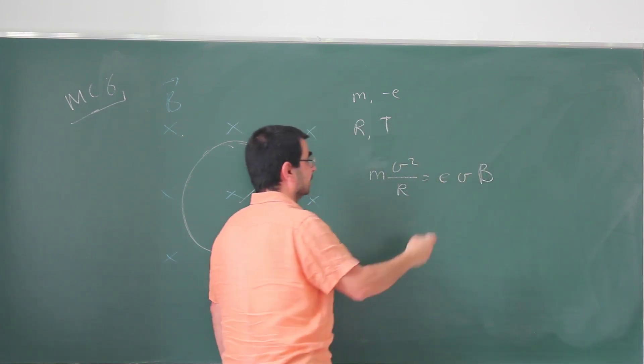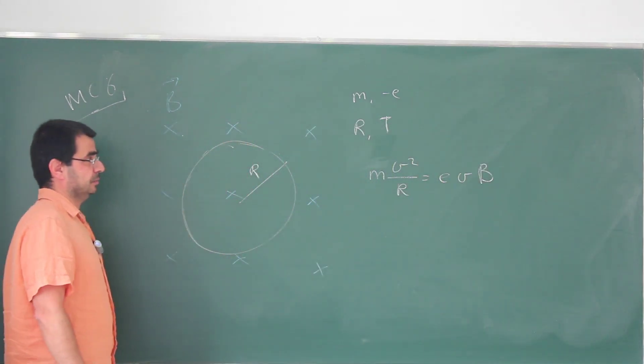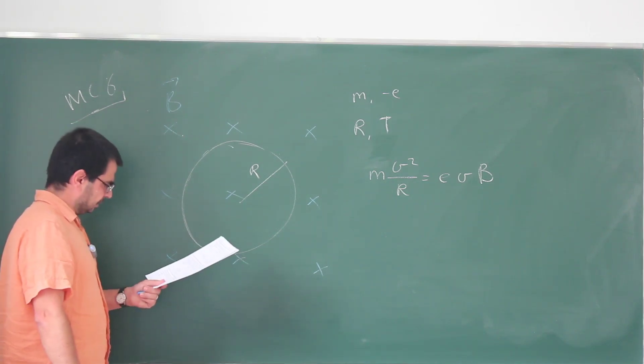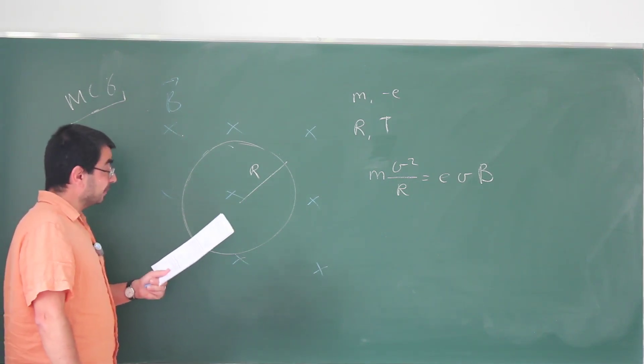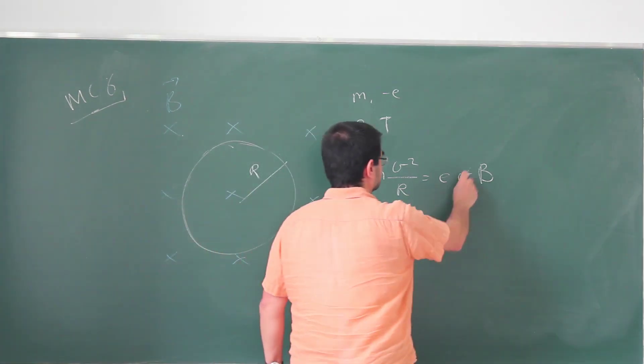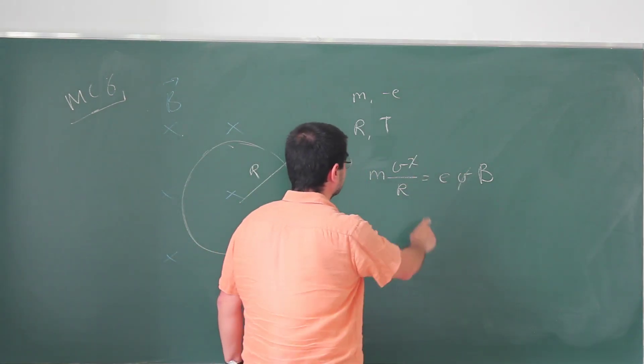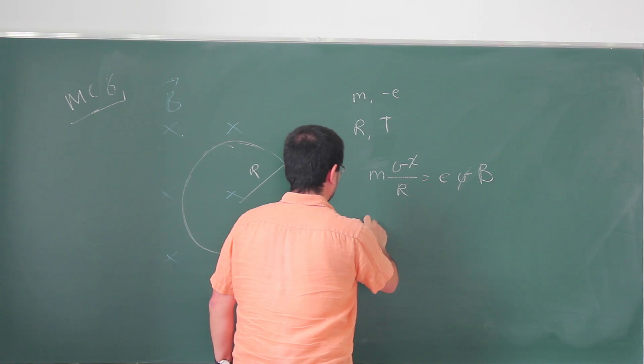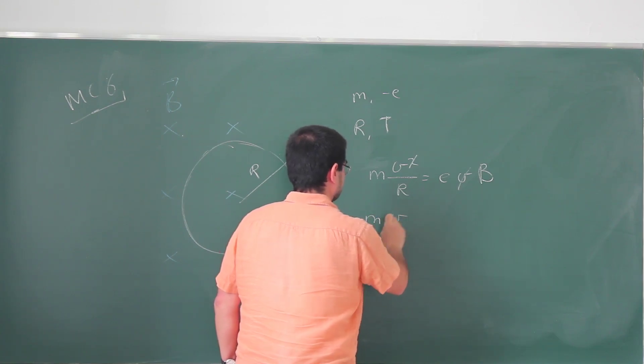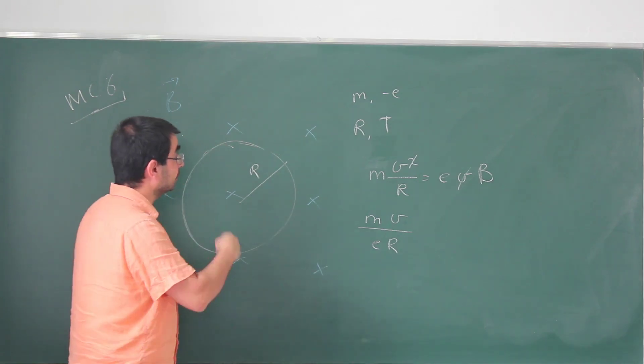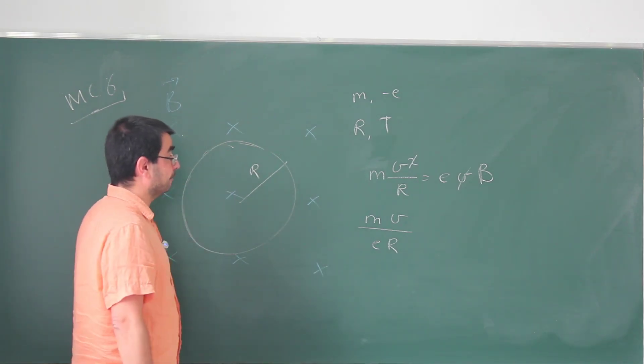What is the magnitude of the field B? So this goes away. This is going to be Mv over ER, but they're not giving you V. They are giving you some other stuff. They are giving you a period, in particular. We can express the speed in terms of the period.